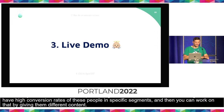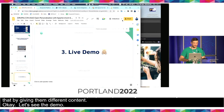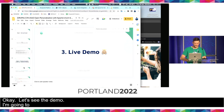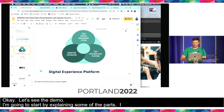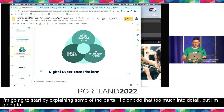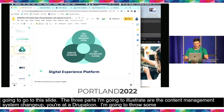Let's see what the demo gods have for us today — a live demo. I'm going to start by explaining some of the parts. The three parts I'm going to illustrate are the content management system, which you know — you're at a DrupalCon, that shouldn't be too much of a surprise. But I'm also going to show some Mautic, which is a marketing automation tool, and then also Apache Unomi, which is a CDP.